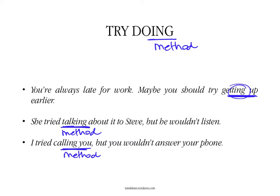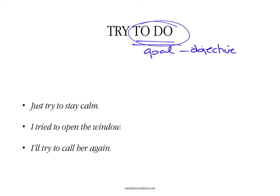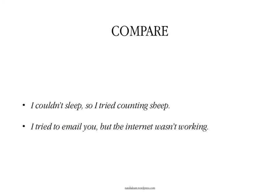If what you want to express is the goal, your aim, your objective, then you need to use the verb in the infinitive after 'try.' For example, 'Just try to stay calm' — that's the main objective. Or 'I tried to open the window' — that's what I wanted to achieve. Or 'I'll try to call her again' — that's what I want to do, the goal I'm aiming for.